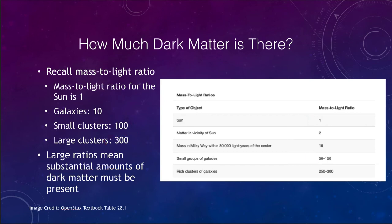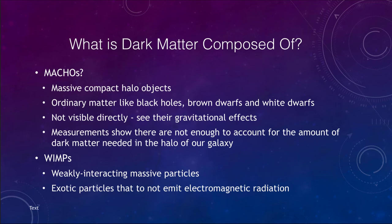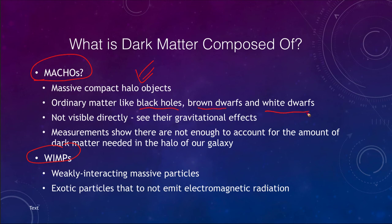What could this dark matter be composed of? There are two main possibilities: MACHOs and WIMPs. MACHOs are massive compact halo objects — essentially ordinary matter like black holes, brown dwarfs, and white dwarfs. These are very hard to see and incredibly faint, but we would see their gravitational effects. However, measurements show there are simply not enough of them to account for the amount of dark matter needed in the halo of our galaxy.